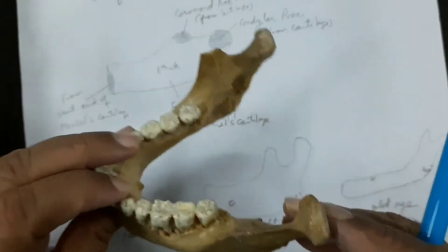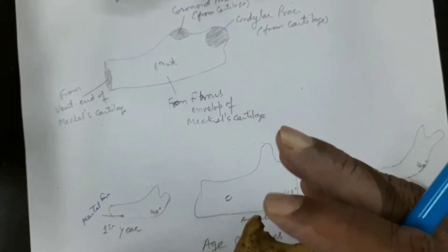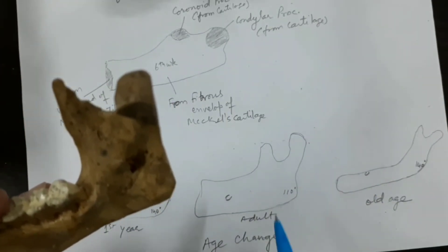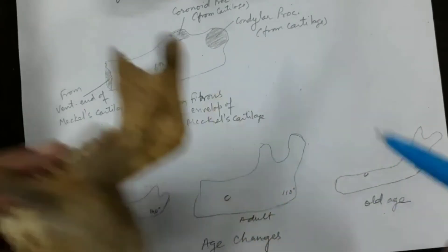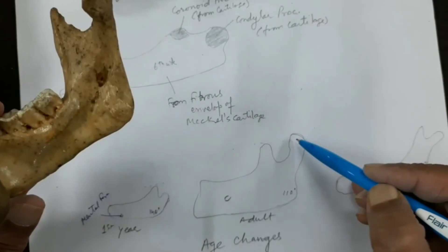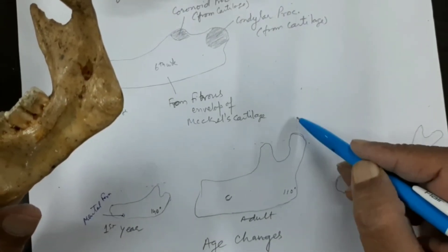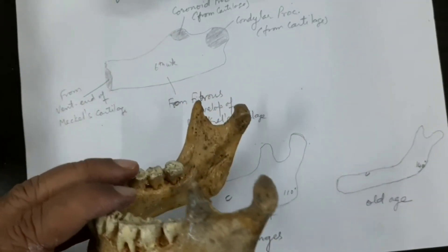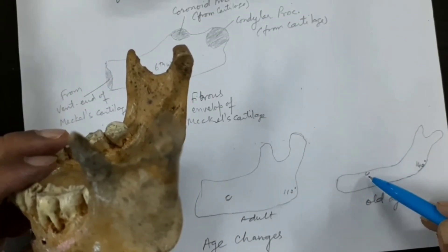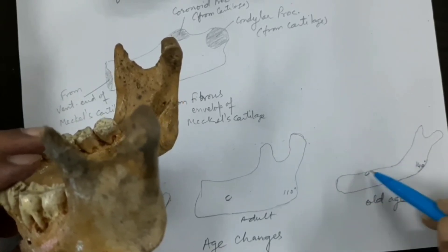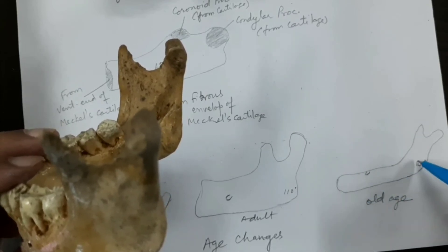In a young adult — after 16 to 18 years of age — the condylar process is at a higher level than the tip of the coronoid process. But as age advances towards old age, the permanent teeth are lost and the alveolar processes are absorbed. A ridge appears in place of the sockets, and the mental foramen goes very close to the upper border, meaning the mandibular canal runs very close to the upper border in old age.